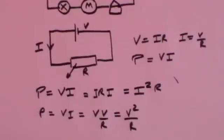So power can be written in one of three ways. It's either the voltage times the current, or it's the current squared times the resistance, or it's the voltage squared divided by the resistance. They are all one and the same thing.